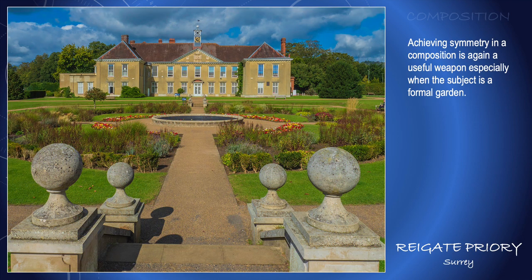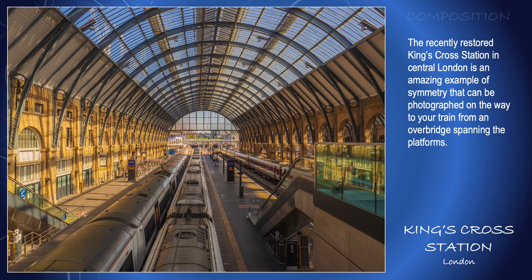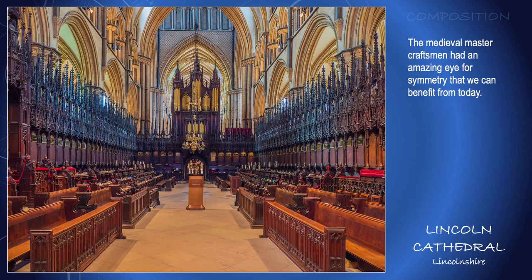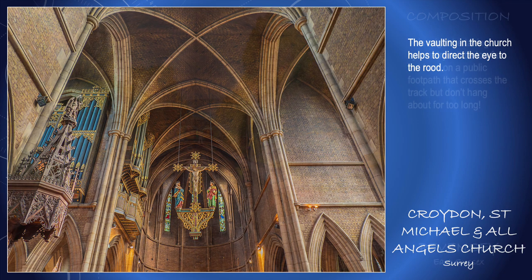Depth to an image can be created with the help of the garden designer, particularly those of formal gardens at Ragged Priory. And in architecture too, the recent restoration of King's Cross Station London makes a wonderful example of symmetry. This shot is taken from the overbridge to the platforms, which you can only access when going to your train, but it's worth a stop. Furthermore, inside our great cathedrals, the master craftsman had an eye for depth and symmetry at Lincoln, and a little later in Croydon at St. Michael and All Angels Church. Taking symmetry to its limit, this might be regarded as a little too risky, but I am on a public footpath that crosses the railway track, but I better move out of the way quickly.